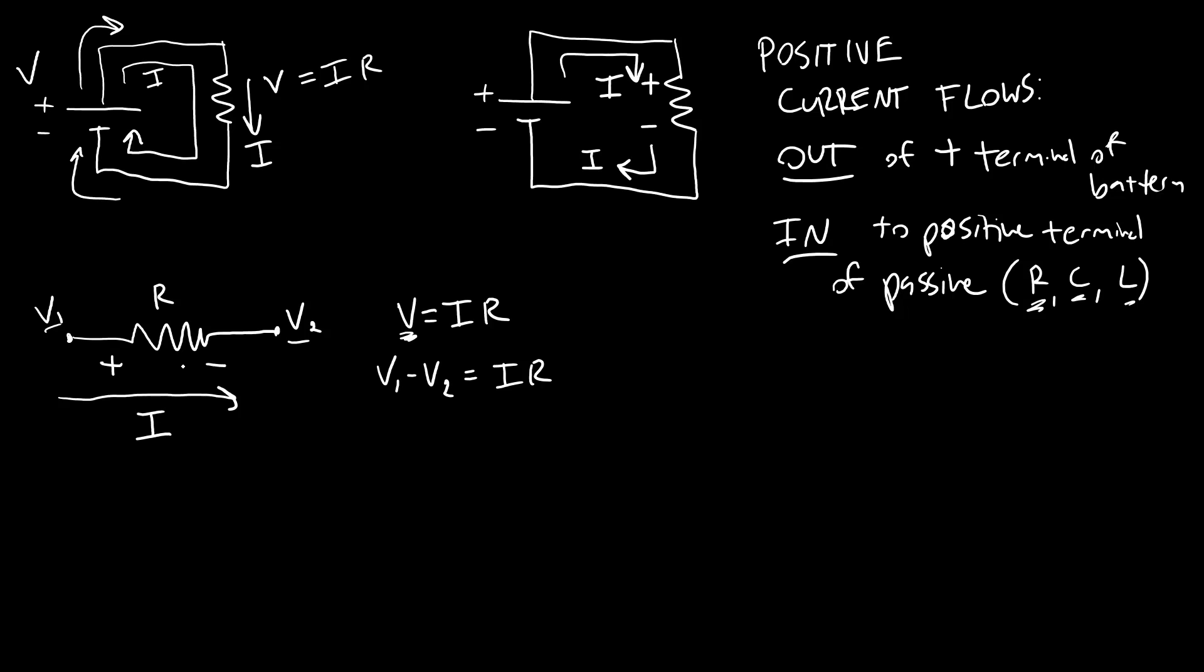So I see that if I have assumed the direction of this current correctly, so current flows from higher voltage to lower voltage, so if v1 is greater than v2 then this quantity will be positive and therefore my current will be positive because I know resistance is positive. At least in this case there's no such thing as a negative resistance. So all I'm doing here is just assuming a sign convention that makes Ohm's law consistent.